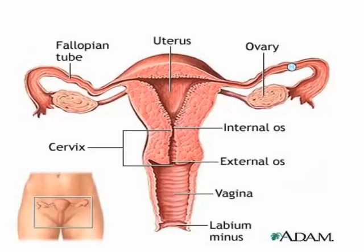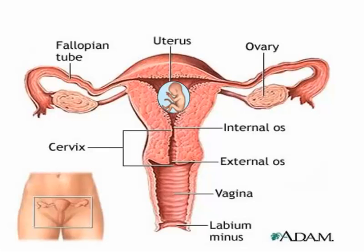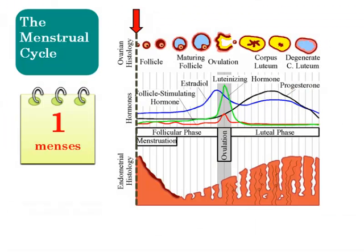The developing human embryo travels down and implants in the uterine wall, where the fetus will continue to grow. After implantation, hormones are released that will maintain the uterine lining. Let's now turn our attention to the physiological effects of hormones during the menstrual cycle and how they affect fertility.